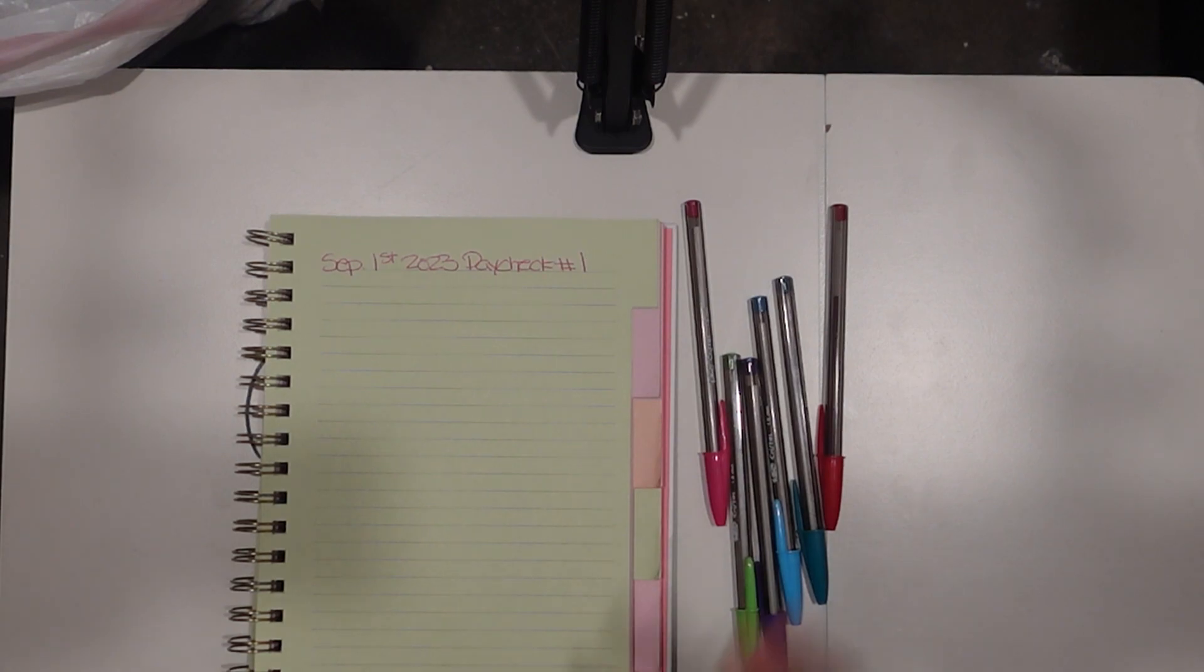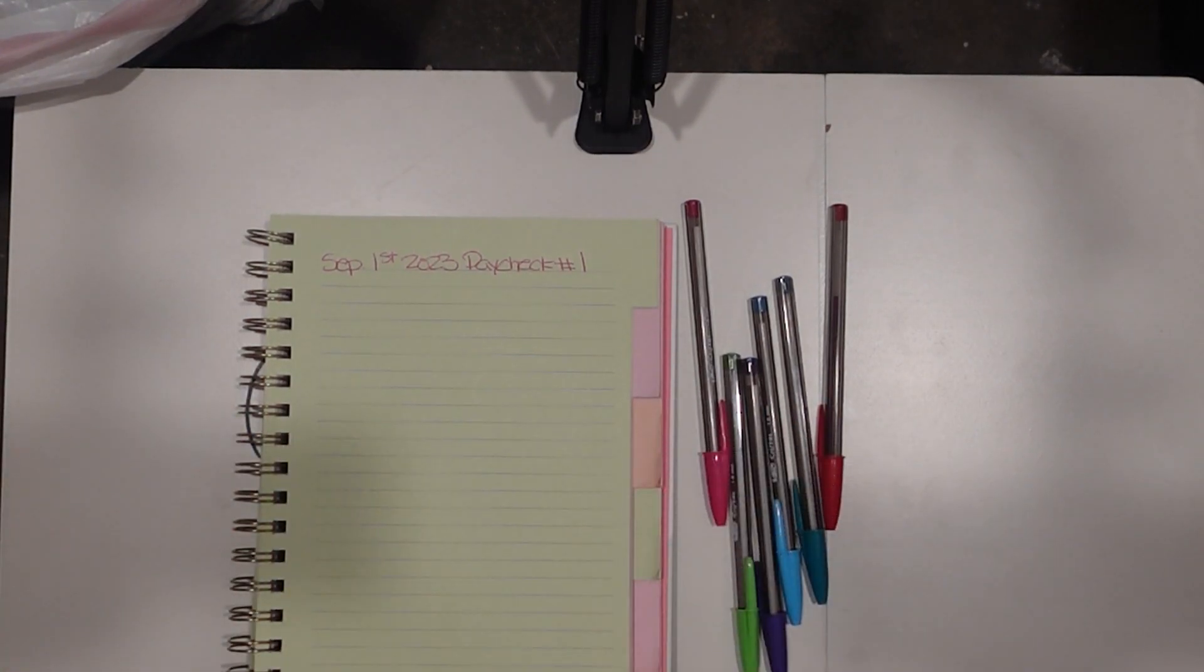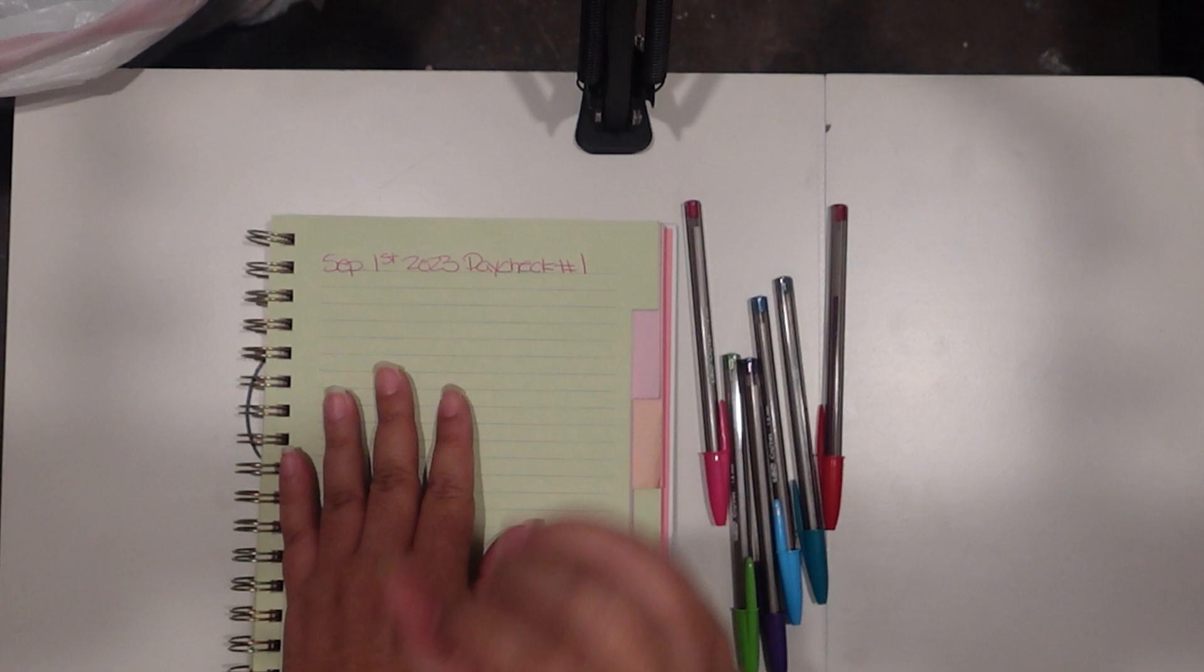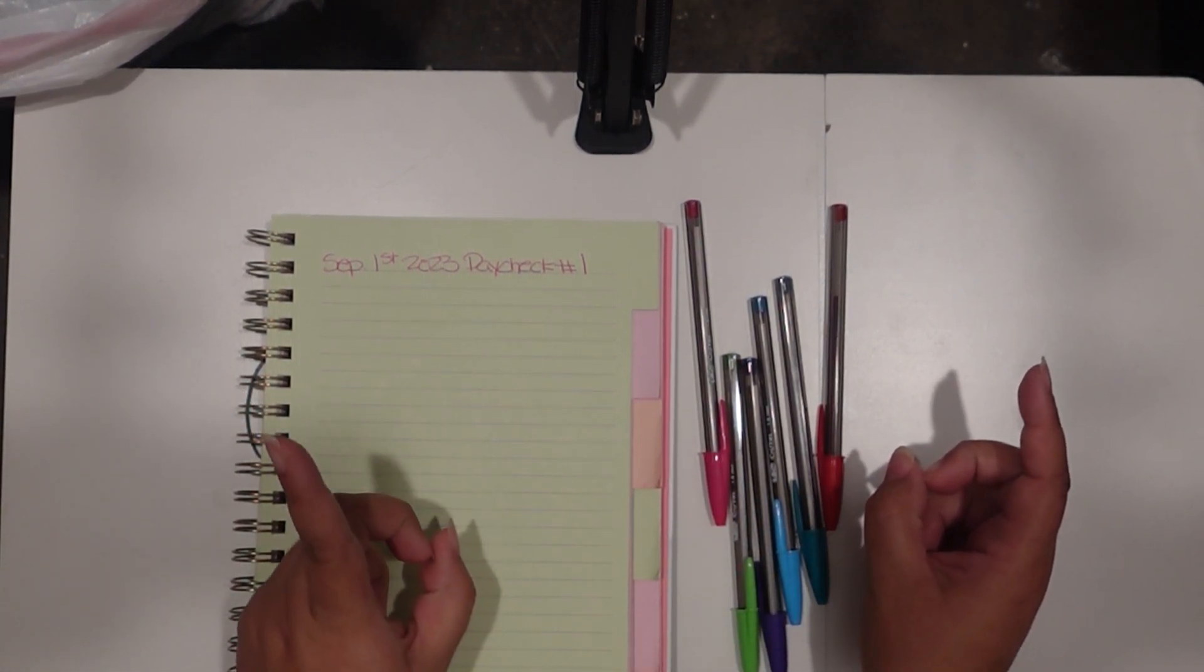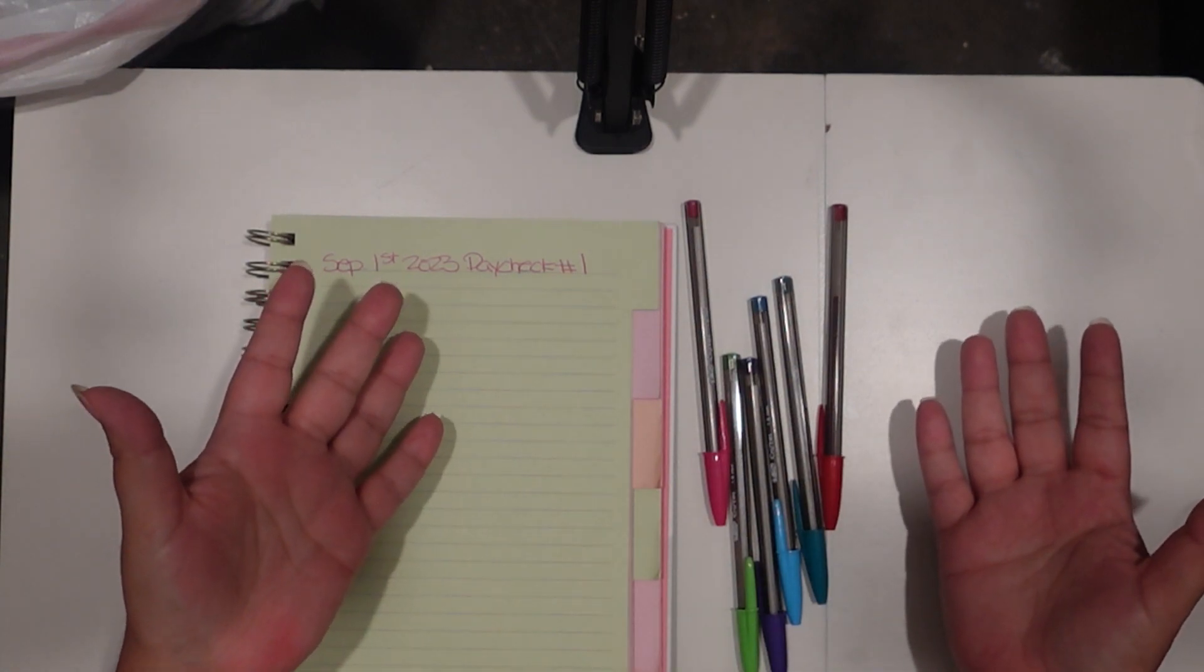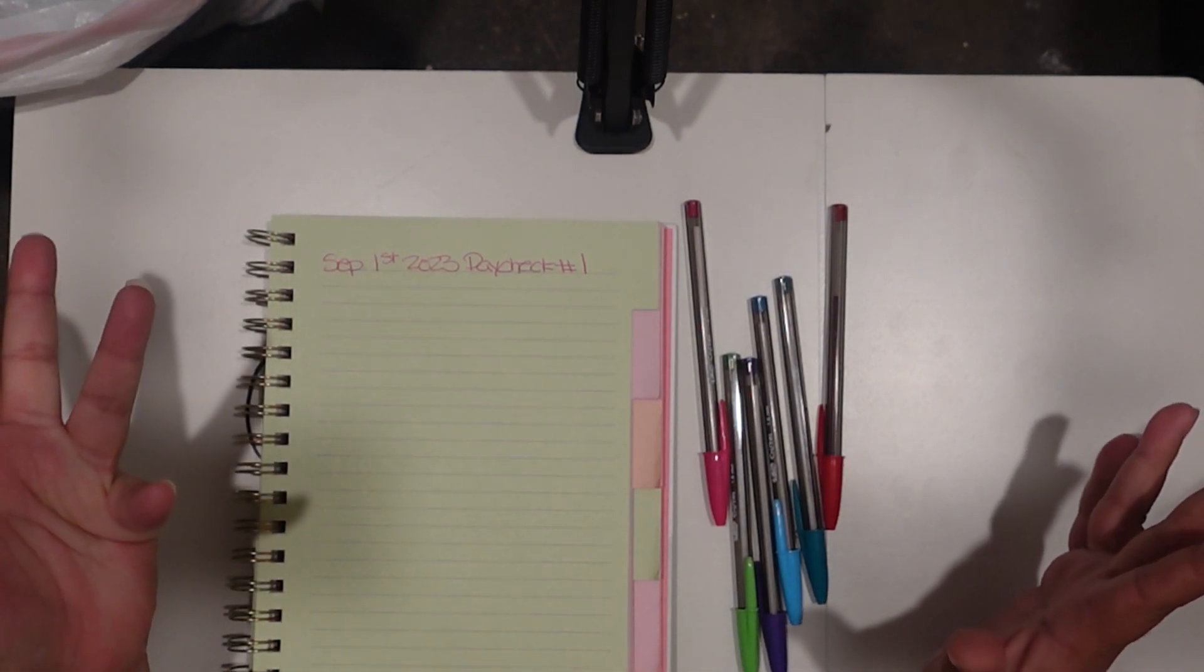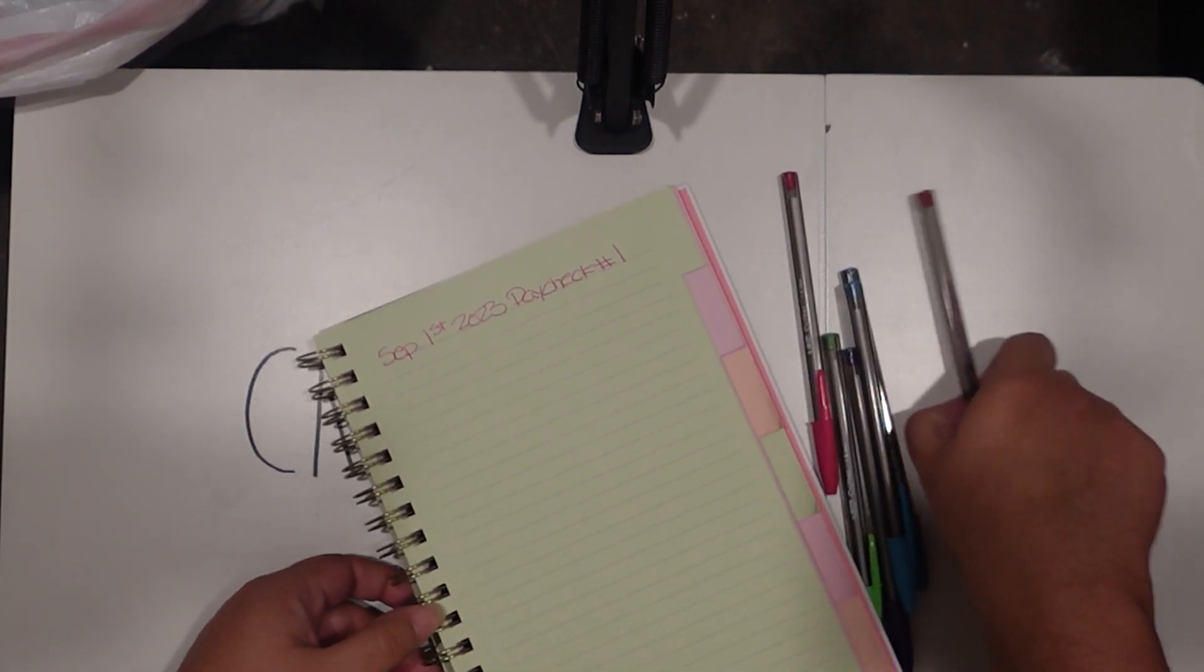Like I said, this is paycheck number one. This is a magic month too, as the budgeting world calls it, because there are five weeks in the month of September. If you're someone who gets paid bi-weekly, you're gaining three paychecks instead of two, or if you're like me who gets paid weekly, you're getting five instead of four. Let's start off with what was my balance before I got paid.